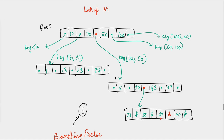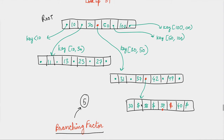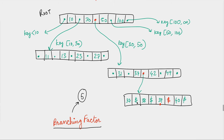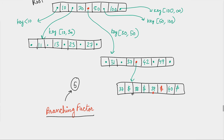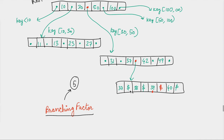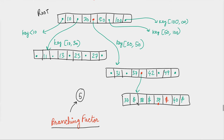Another property of B-trees is they are self-balancing in nature, and all leaf nodes will be at the same level — that's why it's always a balanced tree, it is not skewed. The leaf nodes have the keys and the values. These can be actual values or pointers to another hard disk location where the value resides, depending on the implementation.